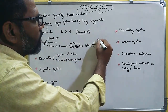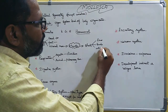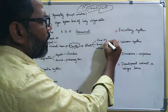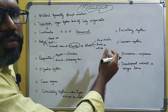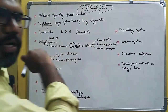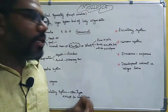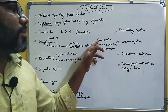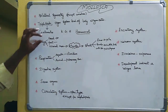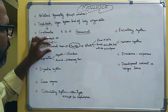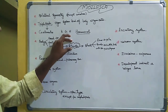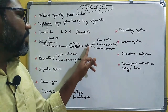There are three types of skeleton in mollusca: exoskeleton, endoskeleton, and without skeleton. The exoskeleton is present — for example, in the shell. Endoskeleton is present in cuttlefish. Without skeleton is seen in octopus.